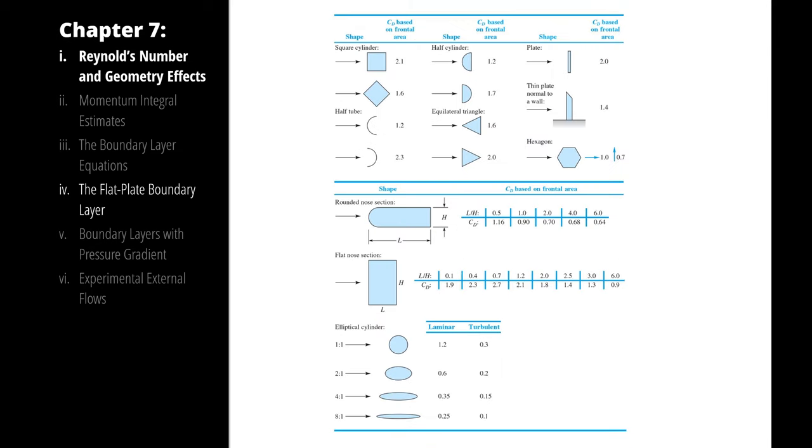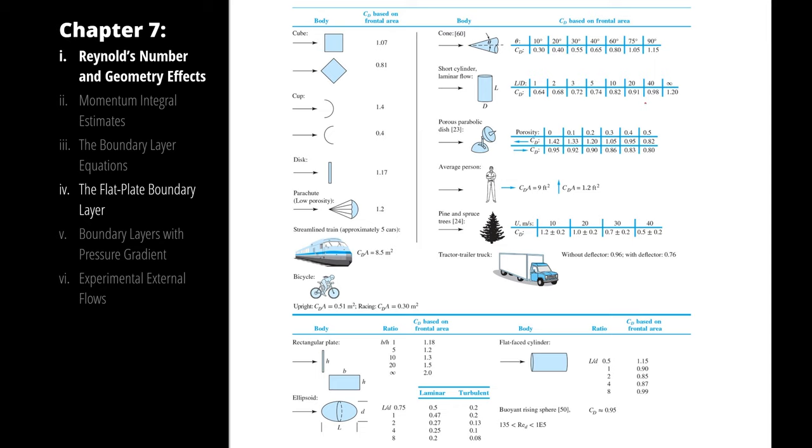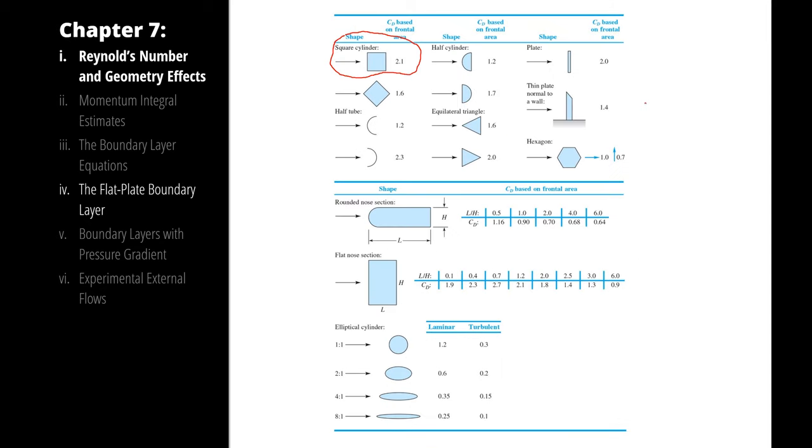Which do you think we should use? We're going to use this one. So on the two-dimensional shapes table, we want the square cylinder. So this is referring to the fact that we have a square that is the same in the z-direction everywhere, as opposed to a cube. Does that distinction make sense? It's a square, but only viewed from the top. It extends across the entire five meter height. So it's a two-dimensional body.